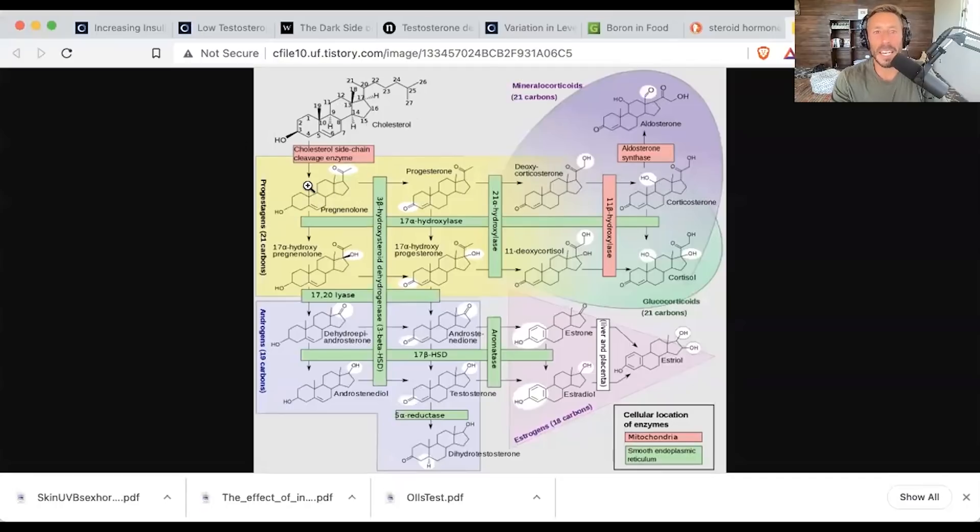So at the top or the beginning of the steroid hormone synthesis pathway, we have pregnenolone. Depending which enzymes you use on this steroid backbone molecule of pregnenolone, you can go to progesterone or you can go to 17-hydroxypregnenolone. And you can see that these molecules have different precursor fates.